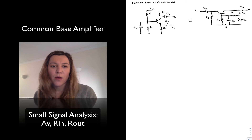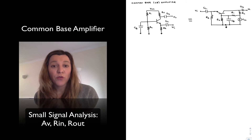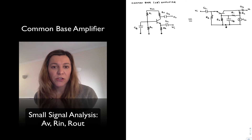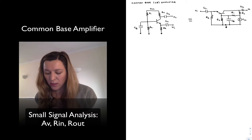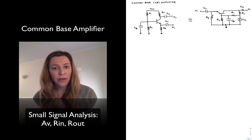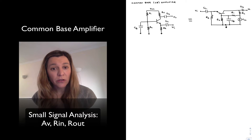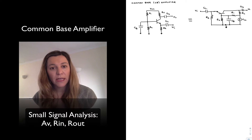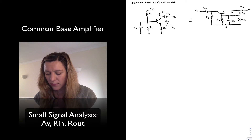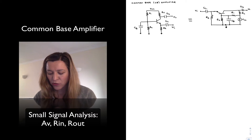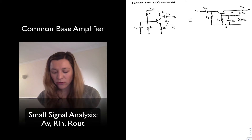We're going to take a look at another one of the single BJT transistor amplifiers, which is the common base amplifier. In a common base amplifier, the input is fed into the emitter of the BJT transistor, and the output is taken out of the collector. That's what I've tried to represent in this circuit.